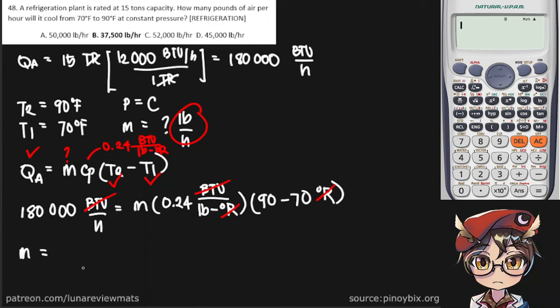So we can now find our mass. Let's quickly put this in our calculator. 180,000 divided by 0.24 times the quantity 90 minus 70. And there you have it. 37,500 pounds per hour. And that is our final answer.